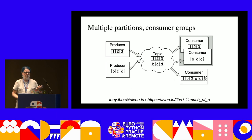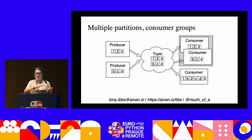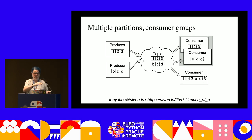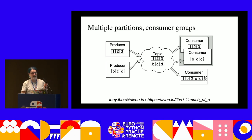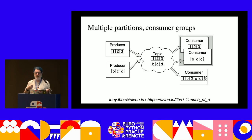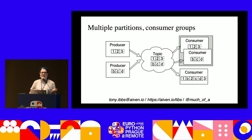Sometimes you want consumers to share the reading. With partitions - one holding 1, 2, 3 and another holding A, B, C - producers can choose which partition by hand, by specifying a key, or let Kafka decide. Consumers in the same consumer group share consuming the partitions: each consumer gets one or more partitions but they won't both see the same ones. A consumer not in a consumer group is entirely independent and sees all messages in order.